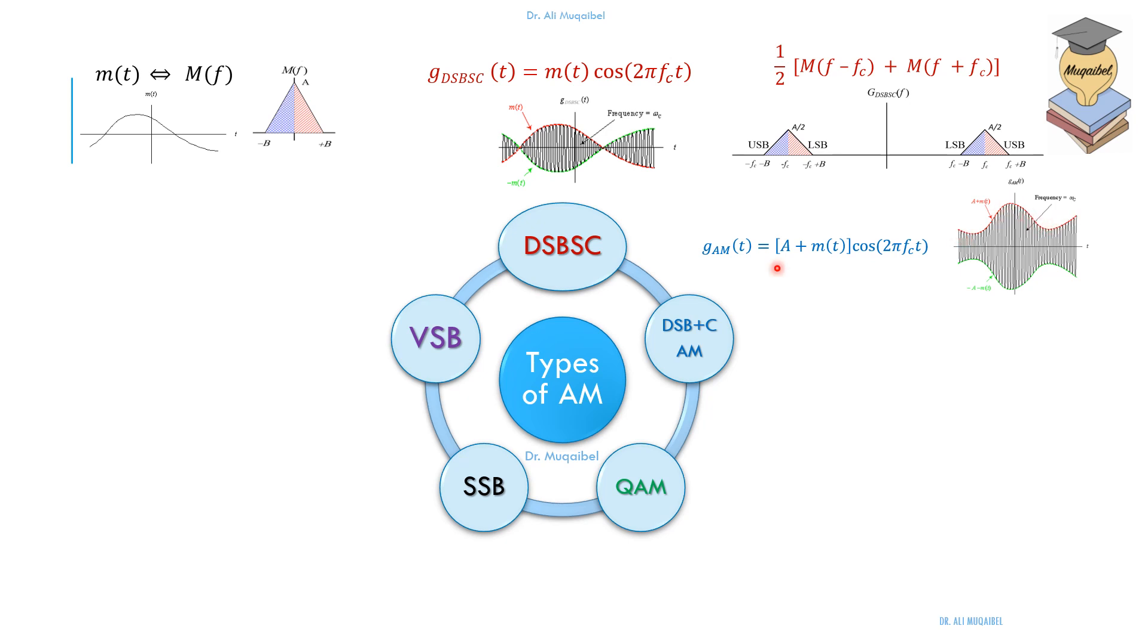We can use envelope detector or rectifier detector, a much cheaper detector to get the signal back. The impact of adding the carrier, or this constant multiplied by the carrier, in the spectrum, we have the original spectrum like double-sided band, and now we have an added carrier term. So if you look at the spectrum, you get the two deltas. These two deltas represent the added carrier.